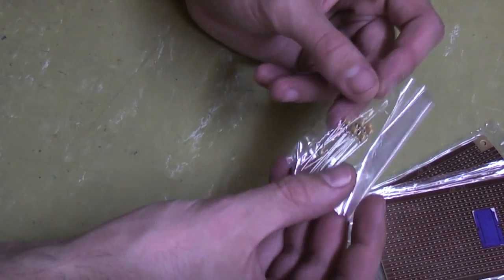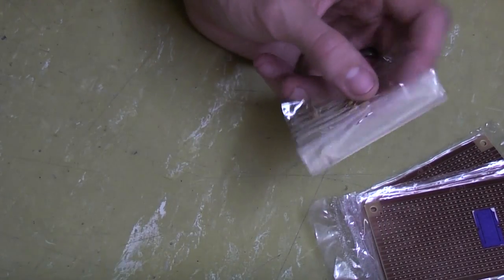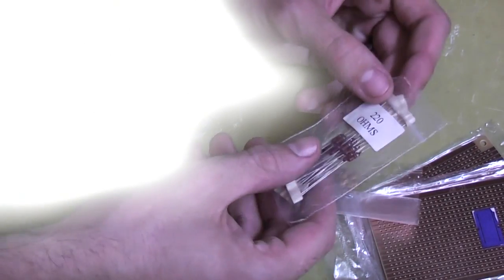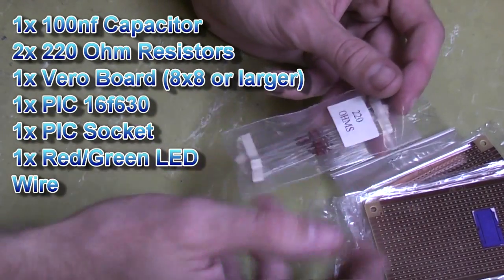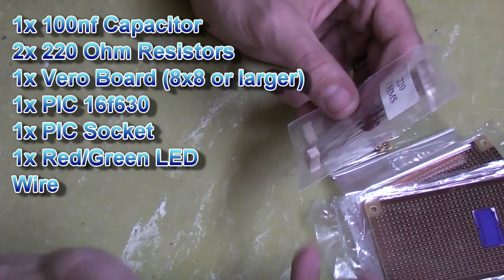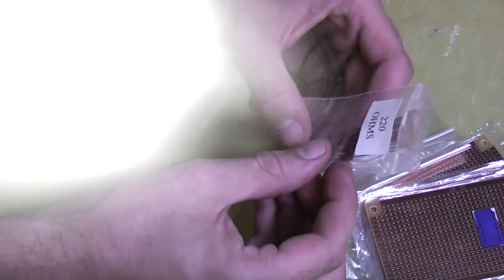You're also going to need some 100 nanofarad capacitors, and you're also going to need some resistors for your LEDs. I've chosen 220 ohm resistors for these, but as I've said in the past, depending on what LEDs you're going to use, it's going to depend on what resistors you really need.